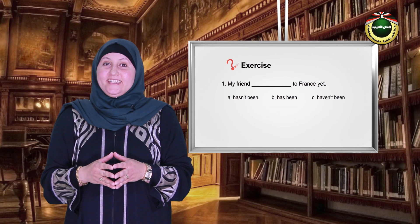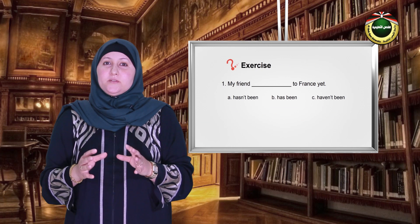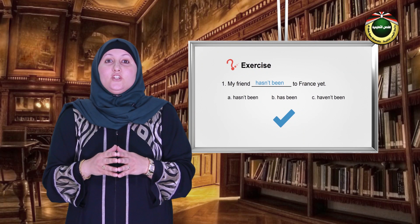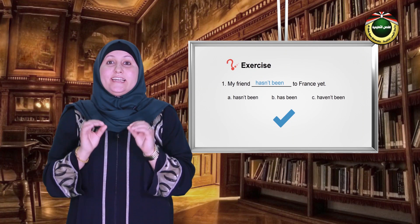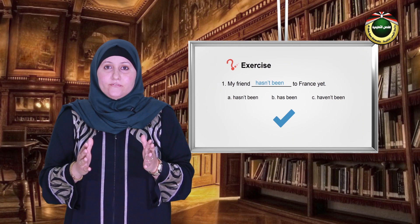Now, how about taking an exercise? Choose the correct answer for the following using the present perfect tense. One: my friend _____ France yet. Options: a) hasn't been, b) has been, c) haven't been. That's correct — a) hasn't been — because my friend is singular and it takes has plus the past participle of the verb. And don't forget the occurrence of the word yet, so we should use hasn't to make it negative.